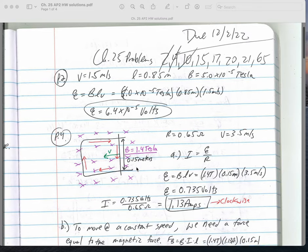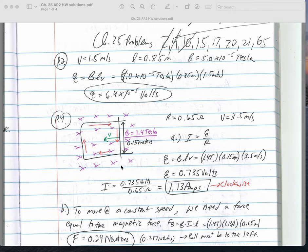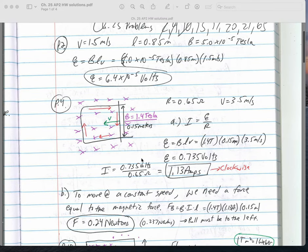You get 6.4 times 10 to the negative 5th volts is your EMF. For problem 4, you've got a metal rod pulled along two frictionless conducting rails at a constant speed of 3.5 meters per second. The rails have negligible resistance but the rod has a resistance of 0.65 ohms. What's the current induced in the rod?